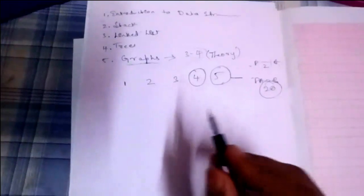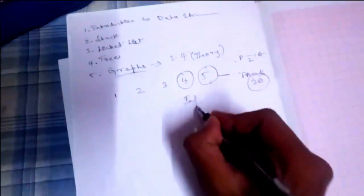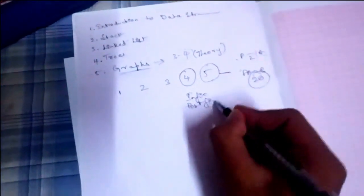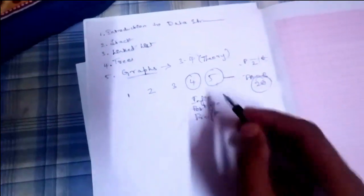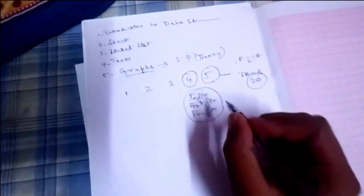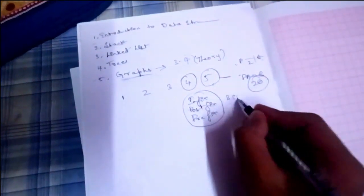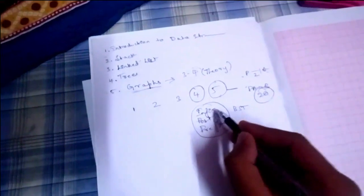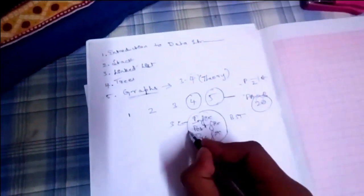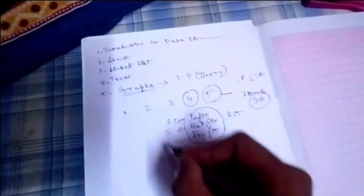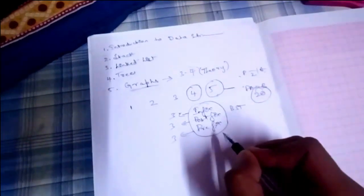Now for the fourth module, Trees — it is also an easy module. You will have numericals like infix, postfix, and prefix conversions. The first thing you have to do is cover all the infix, postfix, and prefix topics. For Binary Search Tree (BST), there is a 33-line C program or syntax that you have to study — it will definitely come in the exam.